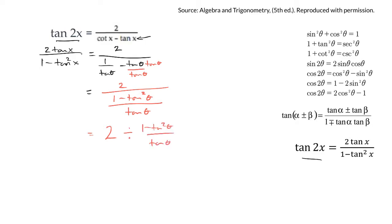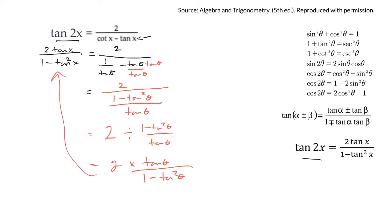Now this is 2 divided by 1 minus tan squared theta over tan theta. And so you can change that to a multiplication if you flip this over. So it would be 2 times tan theta over 1 minus tan squared theta. And if you put those together, you get what's on the other side, and the proof is done.